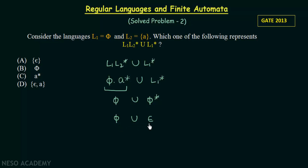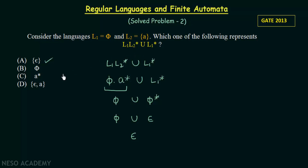Finally, Phi union Epsilon equals Epsilon itself, because Phi represents nothing, and the union with the empty string Epsilon gives just Epsilon. Looking at the options, option A is equal to Epsilon. So the correct answer for this question is option A, which is Epsilon. Performing this operation on the given languages yields Epsilon — that is how we solve this problem.